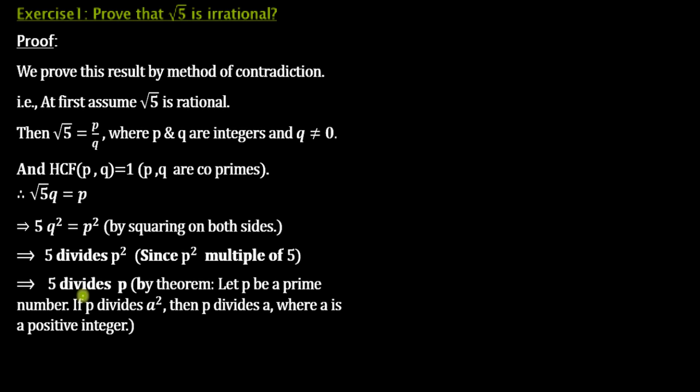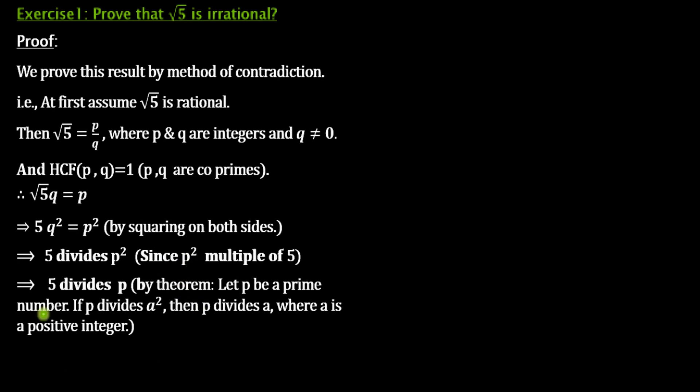In this method, you have to mention what our theorem is about while writing the proof in your examination or when you are writing answers to some questions. Then what is next? If 5 divides P, then P is a multiple of 5. That is, if 5 divides 25, then 25 is a multiple of 5. Like that. What we can write then? P = 5C.